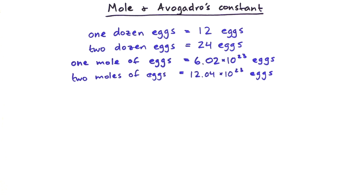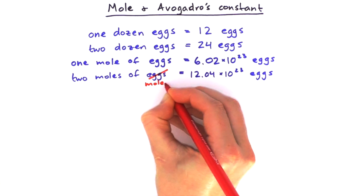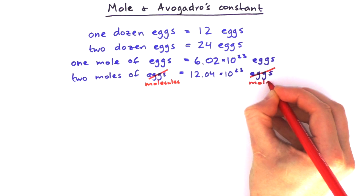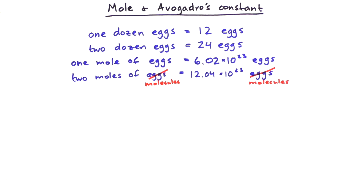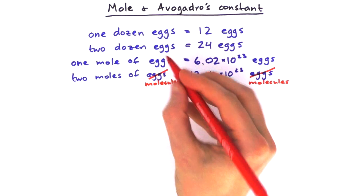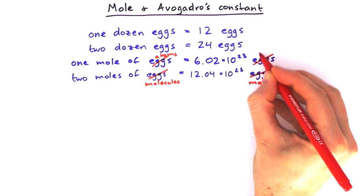We can change all of these into atoms and molecules. Instead of two moles of eggs, we could have two moles of molecules, which would be the same number of molecules. We could have one mole of atoms, which would be 6 times 10 to the power 23 atoms.